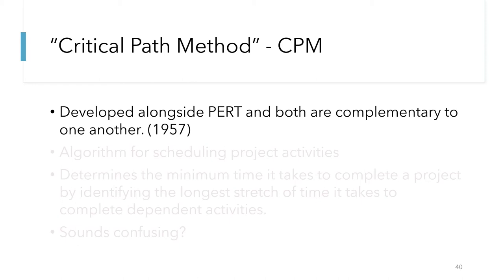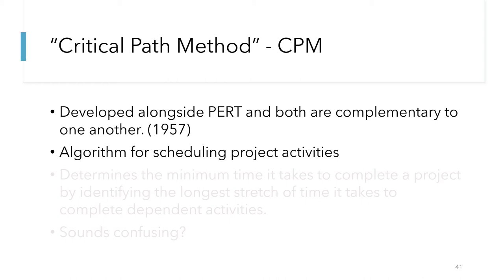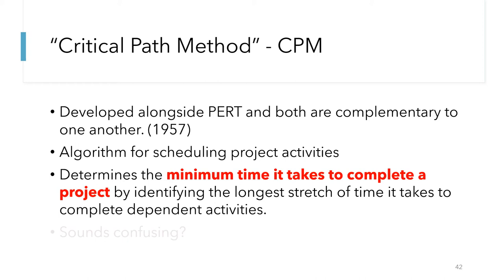Alongside the development of PERT was the Critical Path Method, or CPM. Because these two were developed alongside one another, it can be said that CPM and PERT are complementary to one another. CPM is an algorithm for scheduling project activities. The goal of CPM is to determine the minimum amount of time it takes to complete a project by identifying the longest stretch of time it takes to complete a chain of dependent activities.